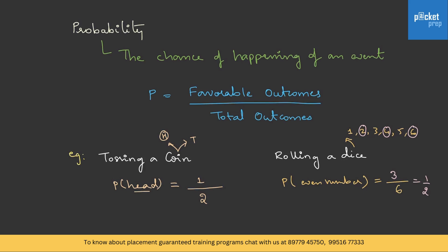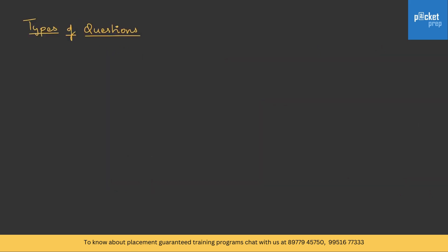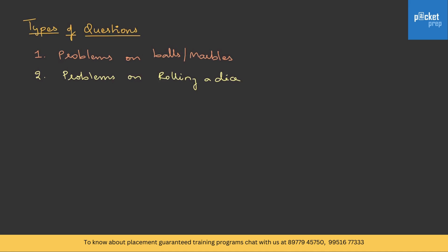This is a basic outline of what probability is and how we calculate it. Now let's look at the different types of questions which come in exams. The first type is problems on balls or marbles — a bag with different kinds of balls where you pick a few and find the probability of a specific color or number. The second is problems on rolling a die — asking for the probability of getting a certain number or sum. The third category is problems on playing cards, such as drawing a king or a spade.